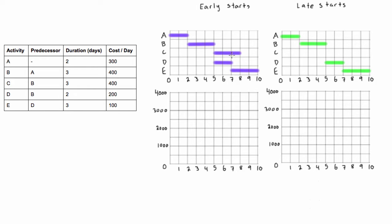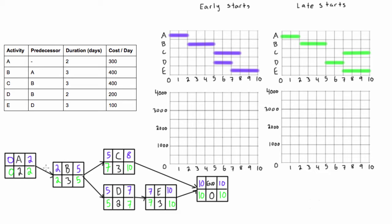Activity C is not on the critical path, so it can end at the end of the project without affecting the end date. Its late finish would be 10, and since it's 3 days long, its late start would be 7 to 10. If you're confused, you can always draw the PDM network diagram — I'll draw it here to confirm. Early start and early finish are in blue, late start and late finish in green, so for activity C: late start 7, late finish 10. It's a good skill to read the table of dependencies directly.